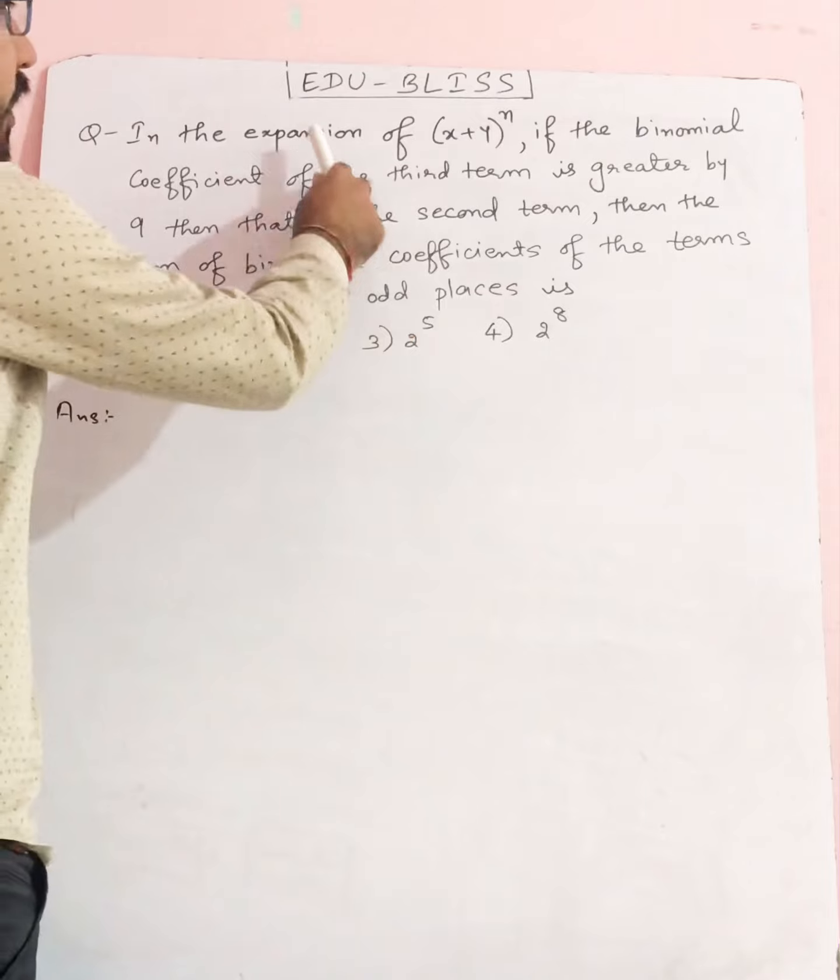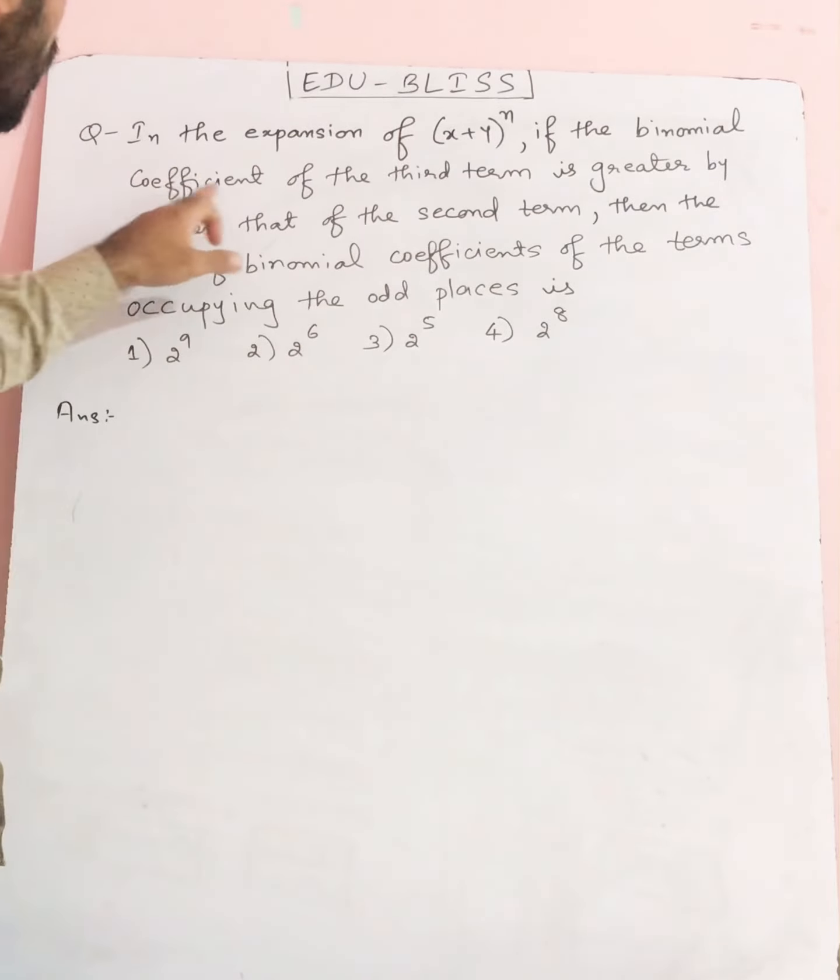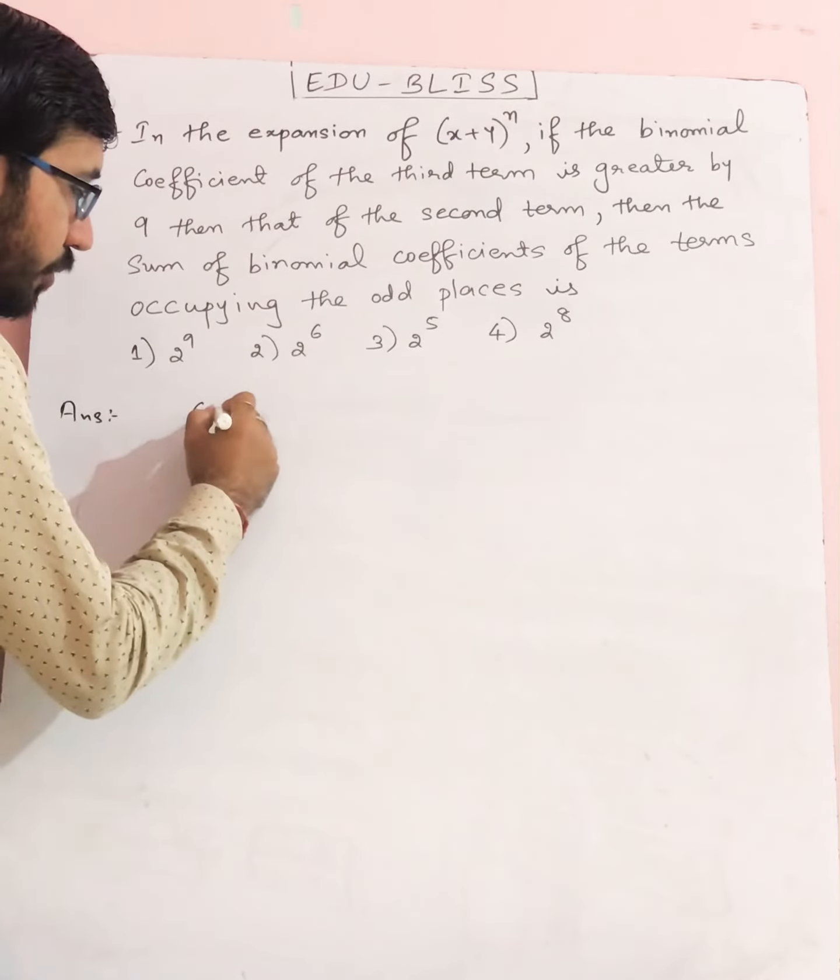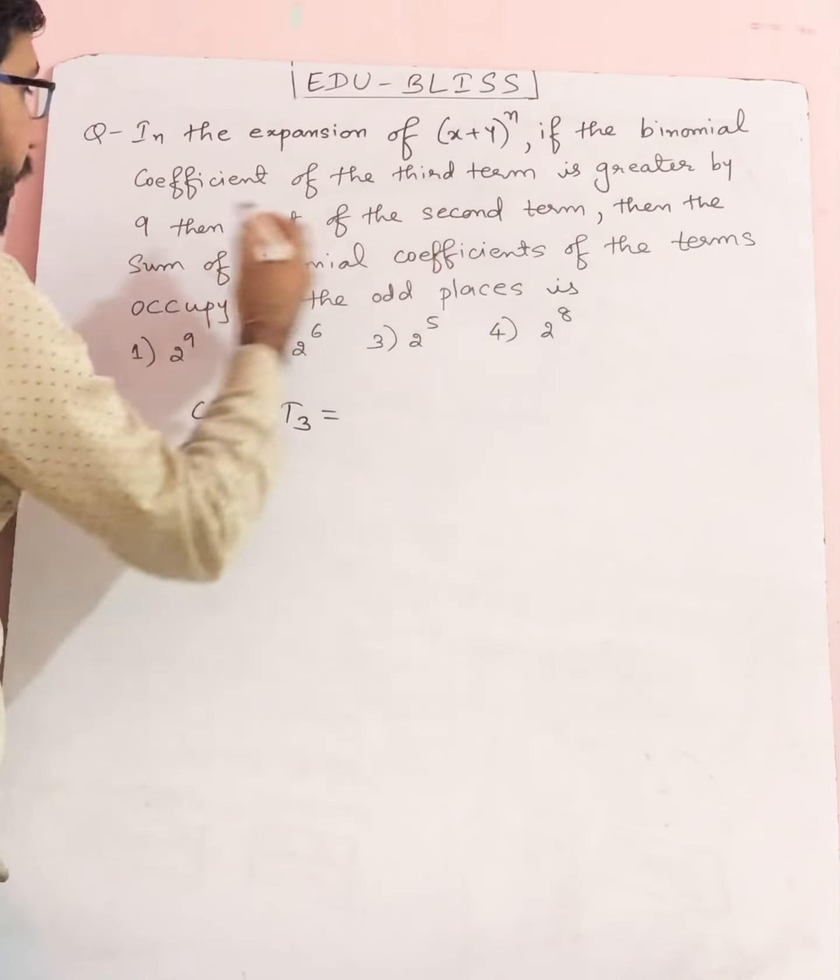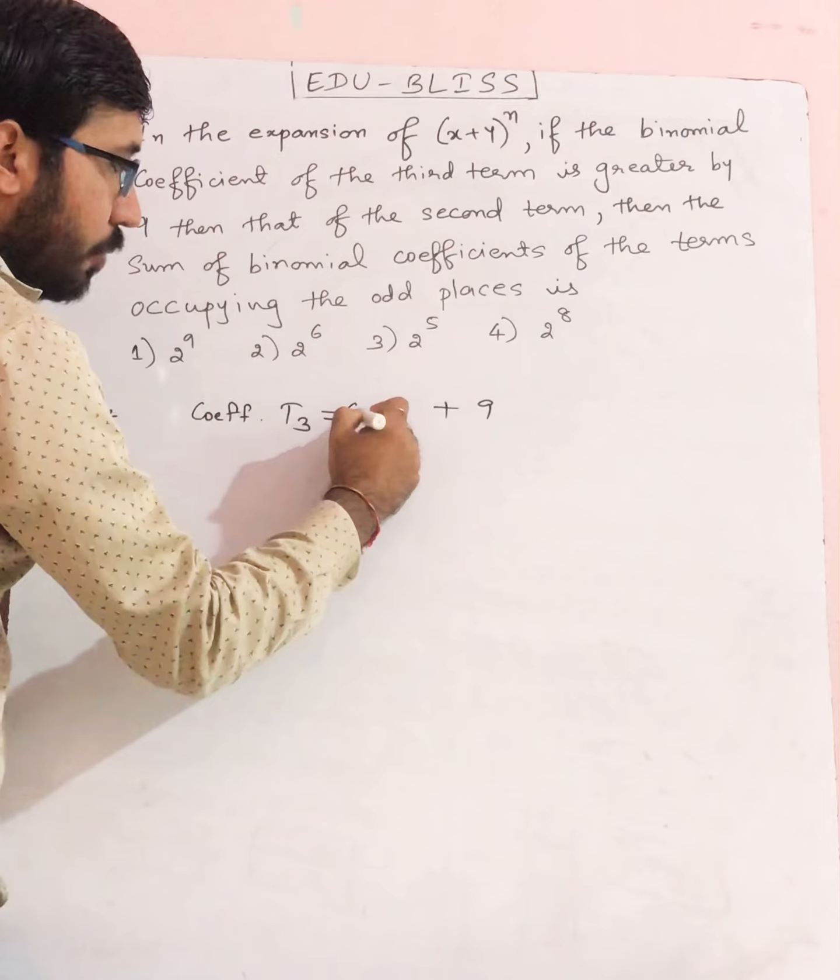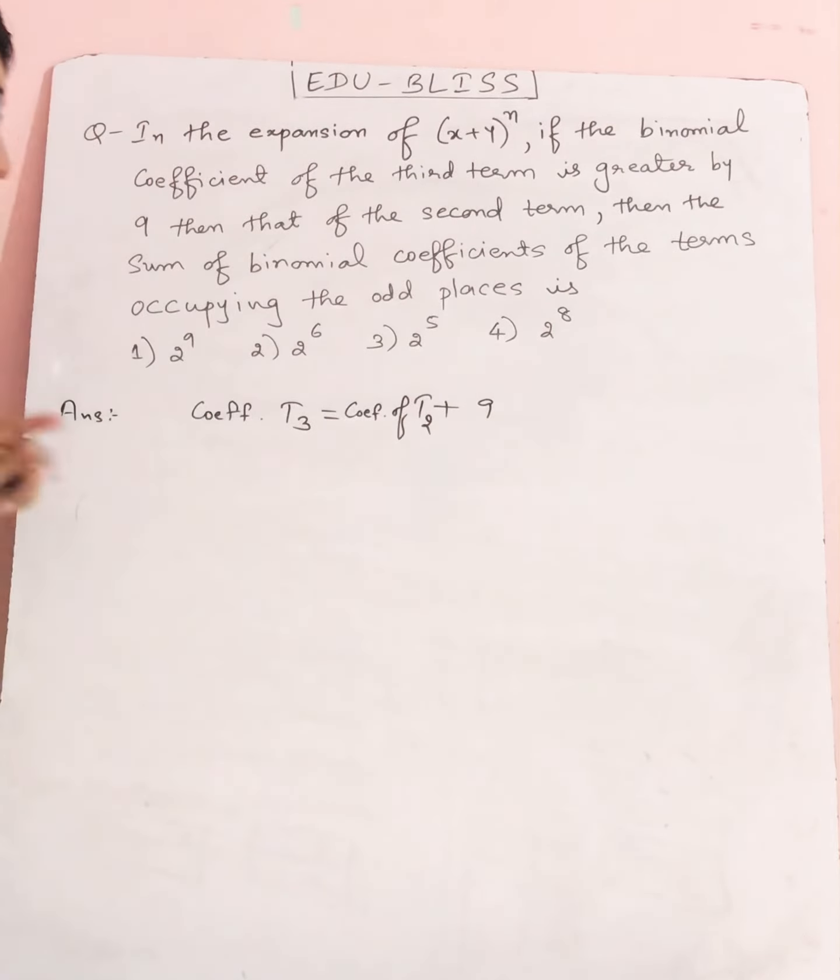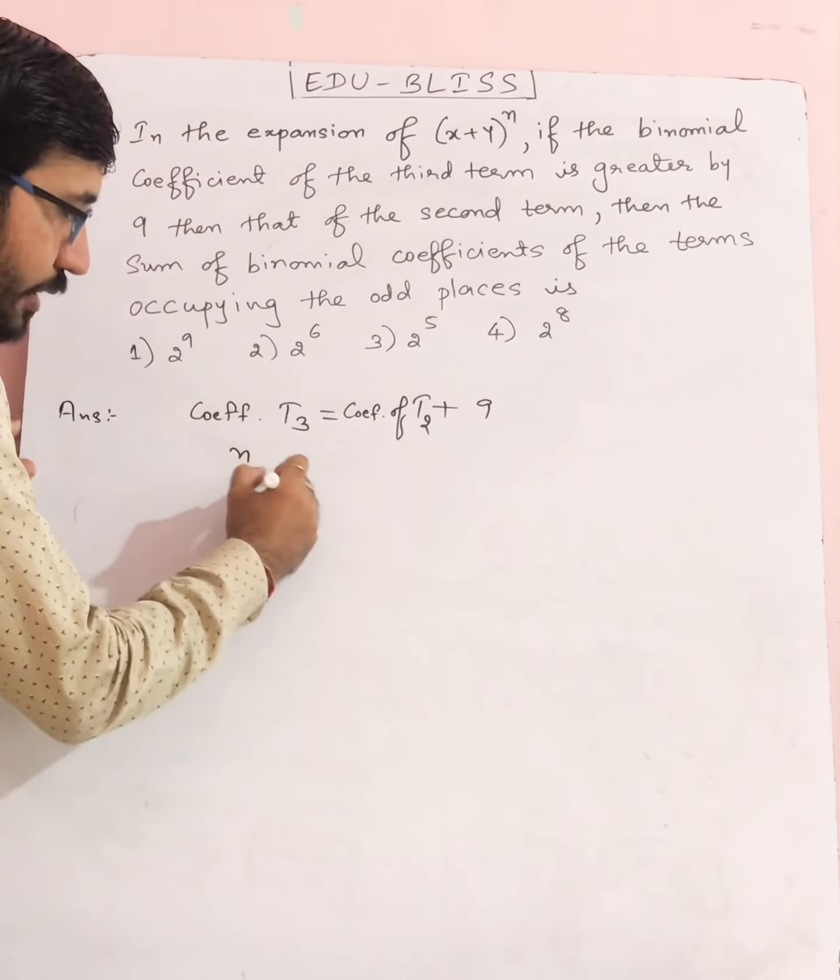Next question: In the expansion of (x+y)^n, if the binomial coefficient of the third term is greater by nine than that of the second term, then the coefficient of the third term is equal to the coefficient of the second term plus nine. This means nC2 equals nC1 plus 9.